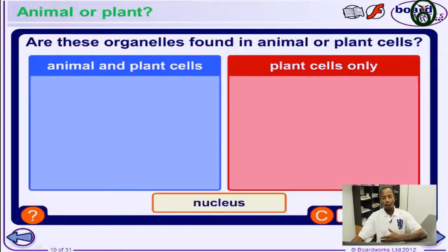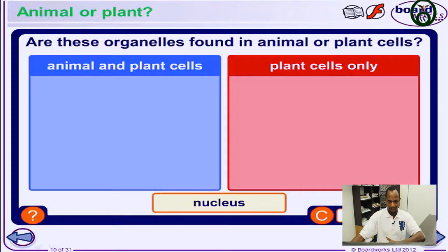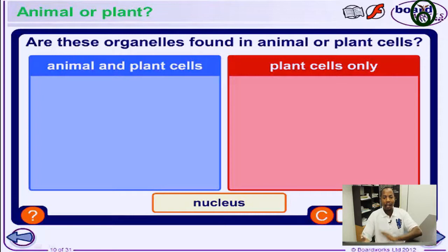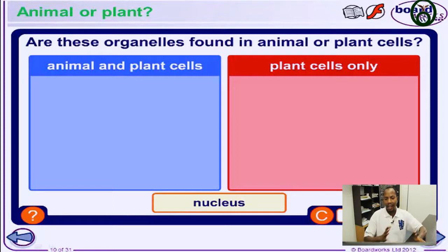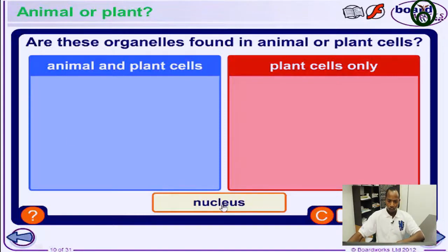Now let's look at the characteristics of plant and animal cells — what they have in common and what plant cells have exclusively. The nucleus: both plant and animal cells have it. The cytoplasm: both plant and animal cells have cytoplasm.